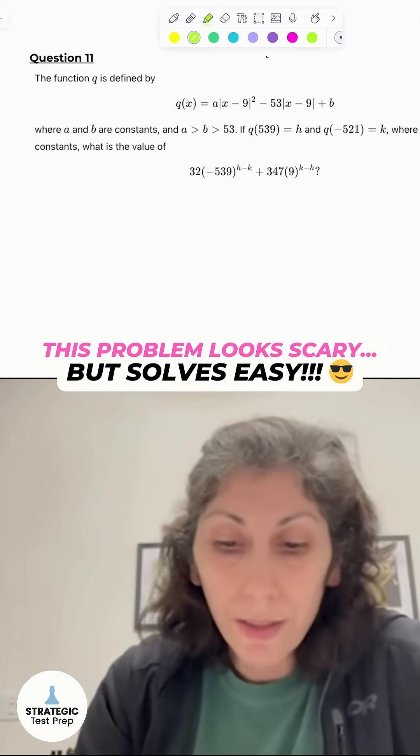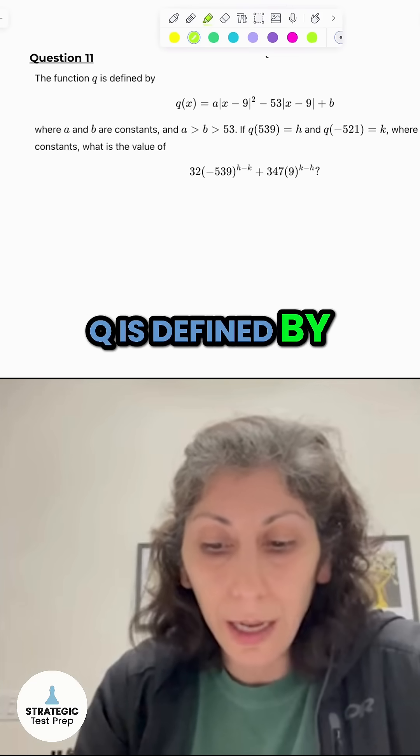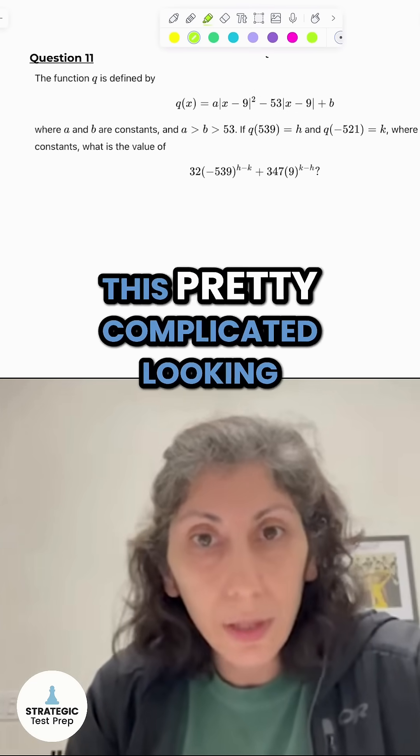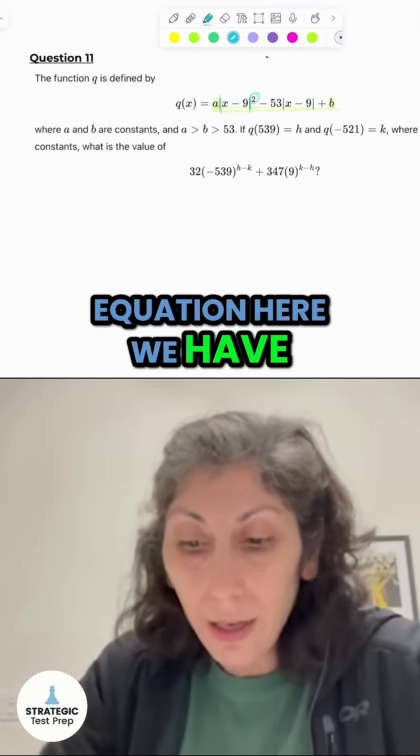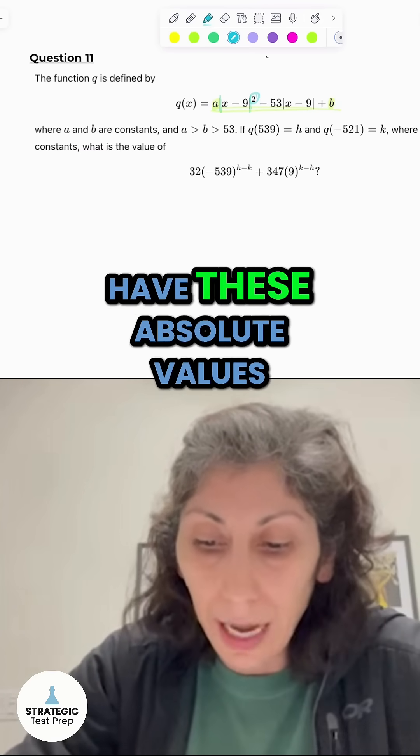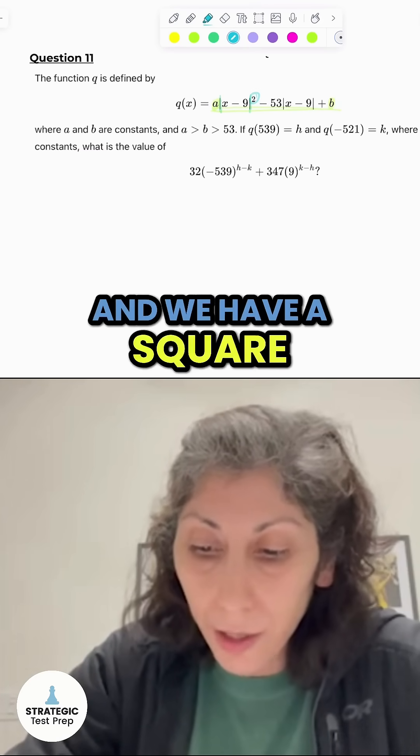So if you read this question, it says the function Q is defined by Q of X is equal to, and they give us this pretty complicated looking equation here. We have these unknowns of A and B and we have these absolute values and we have a square. They've literally thrown in everything in the kitchen sink into this problem.